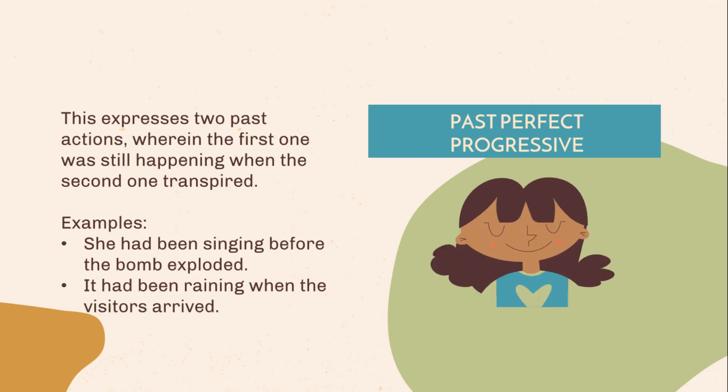Past perfect progressive. This expresses two past actions wherein the first one was still happening when the second one transpired. Examples: She had been singing before the bomb exploded. It had been raining when the visitors arrived.